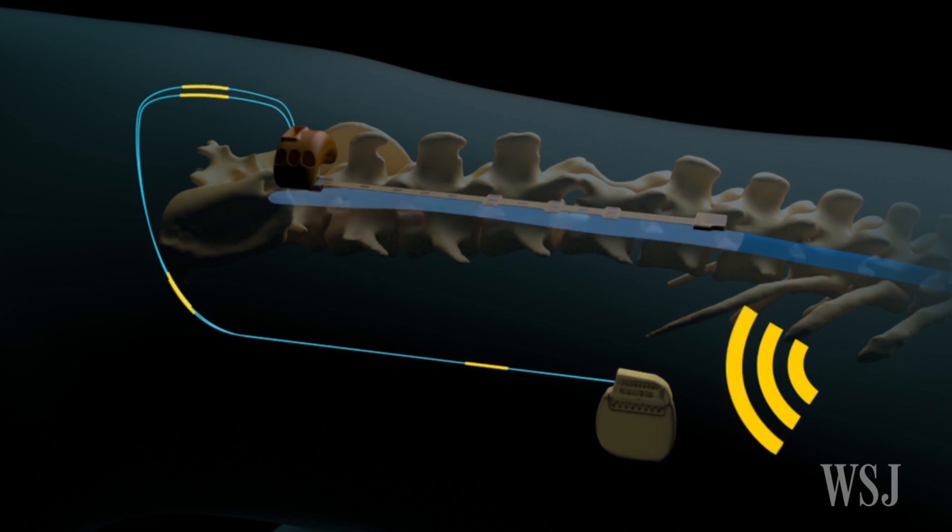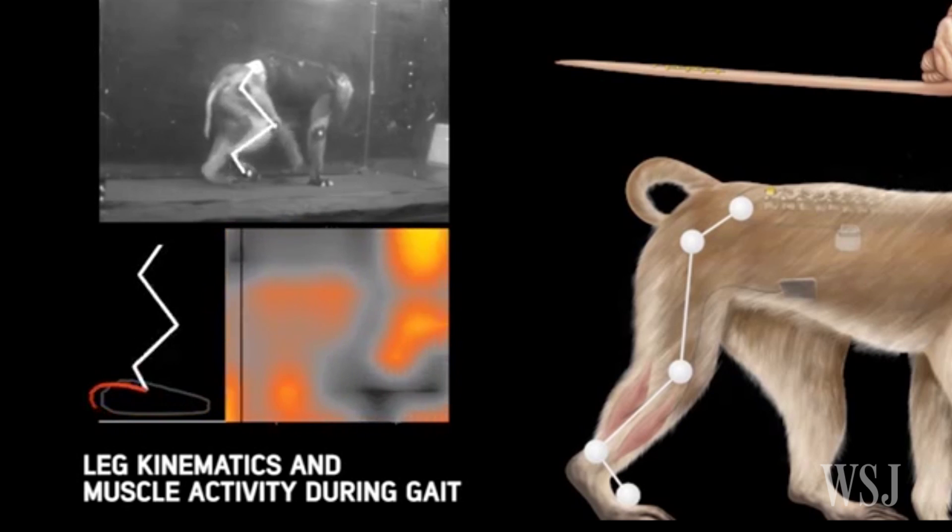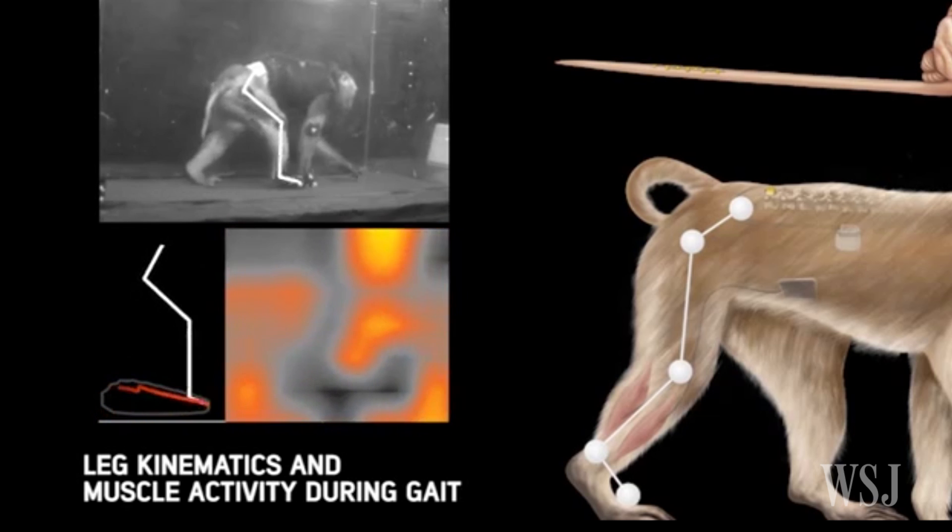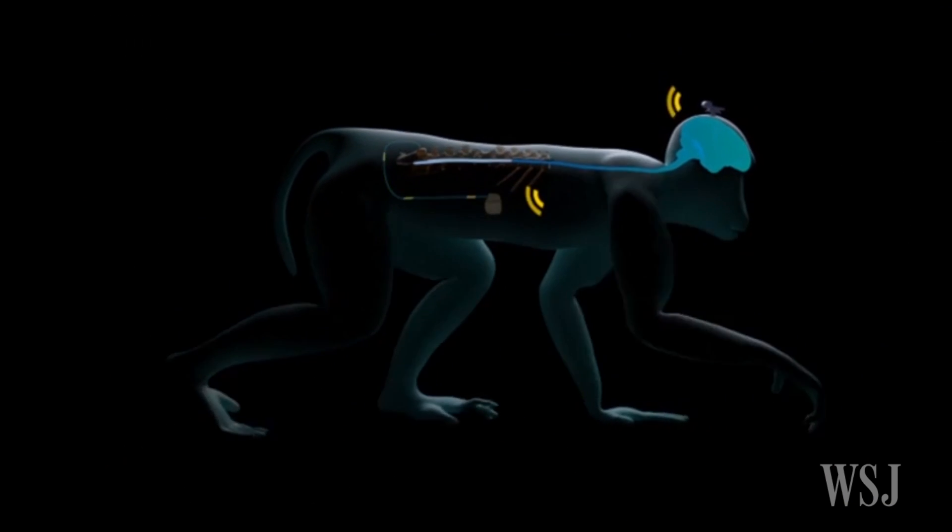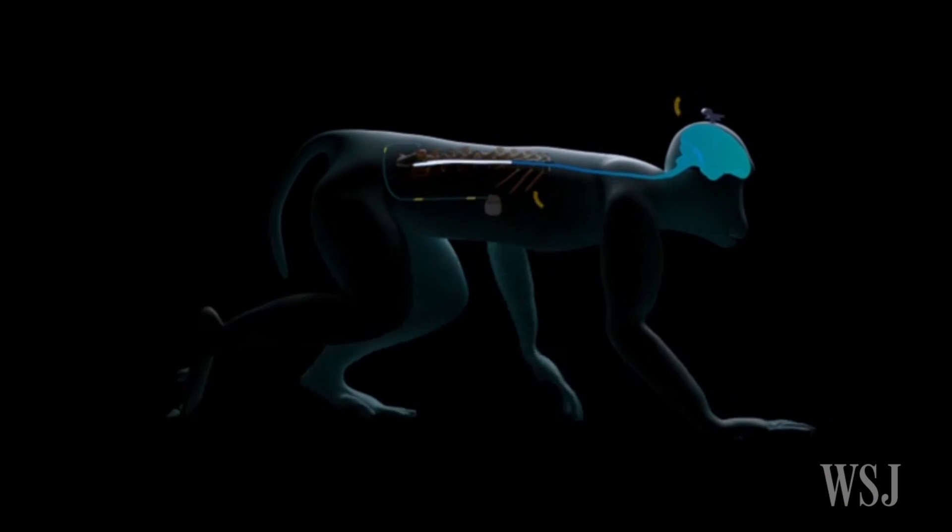The computer forwards that information to a stimulator implanted in the monkey's spine. The stimulator delivers electrical stimulation at the right location and with the correct timing to enable the intended movement.